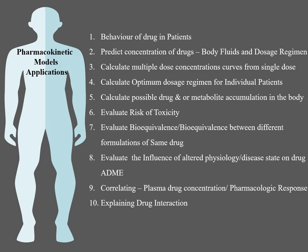Coming to the applications of pharmacokinetic models. A pharmacokinetic model helps us to study the behavior of a drug in patients. A patient is administered with a drug; the drug undergoes absorption, distribution, metabolism and excretion, and based on assessment of these four processes, we can assess the drug's behavior. Second, it is used to predict the concentration of drug in body fluids. The body has different compartments like extravascular and intravascular, and concentration in each can be assessed by applying pharmacokinetic models.